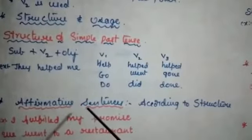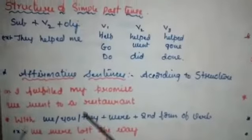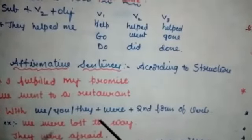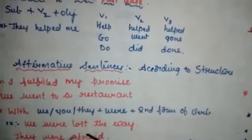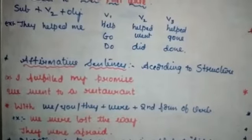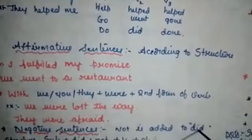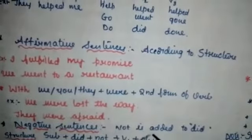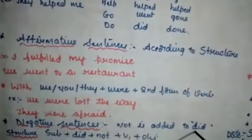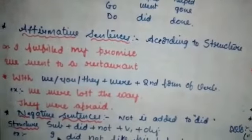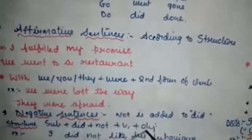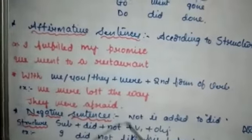In affirmative sentences a helping verb is not needed. But a helping verb is needed to make negative and interrogative sentences. The helping verb used in simple past to make negative sentences is 'did'. In present tense we use 'do' or 'does', but in past tense we use 'did' as a helping verb. The structure for negative sentences is: Subject + did + not + V1 + object. V1 always comes after 'did'.